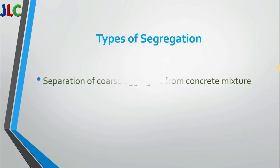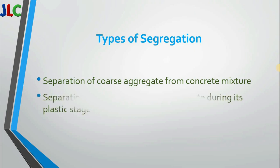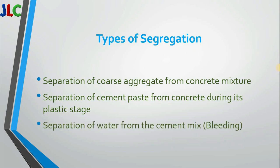Types of Segregation: First, separation of coarse aggregate from the concrete mixture. Second, separation of cement paste from concrete during its plastic stage. Third, separation of water from the concrete mix — this is also called bleeding.